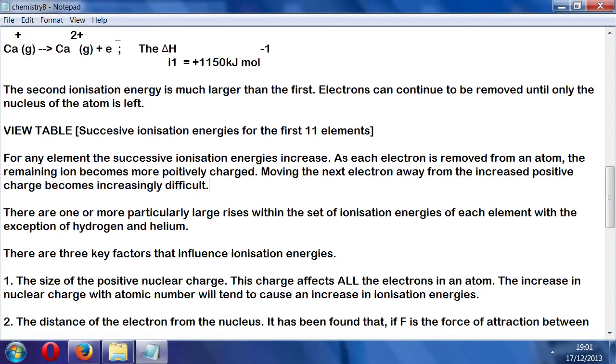For any element, the successive ionization energy is going to increase. As each electron is removed from the atom, the remaining ion becomes more positively charged. Moving the next electron away from the increased positive charge becomes increasingly difficult. There are one or more particularly large rises within the set of ionization energies of each element, with the exception of hydrogen and helium.